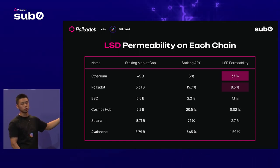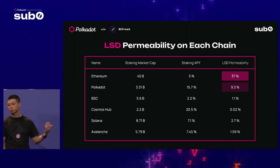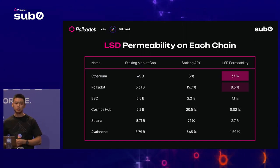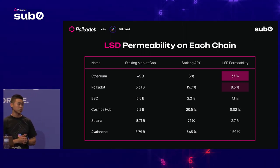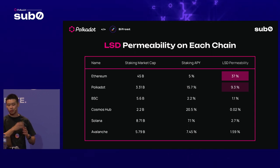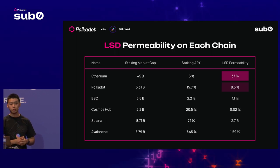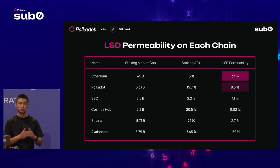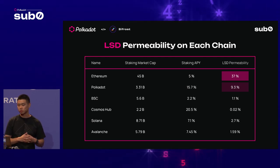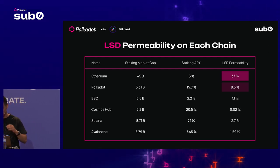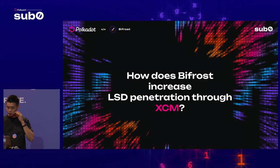For Polkadot, we have 9.3% liquid staking penetration with a relatively higher staking APY. Comparing to BSC, Cosmos, Solana, and Avalanche, Polkadot has more potential to build more applications and expand penetration among different blockchains, including Ethereum. The question is: how can we increase penetration among different chains by liquid staking, especially utilizing XCM?